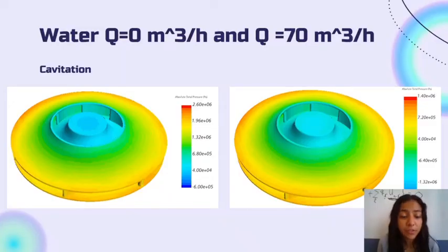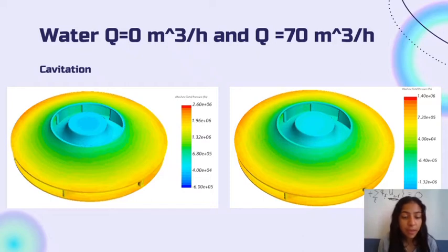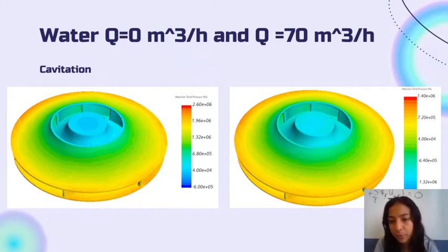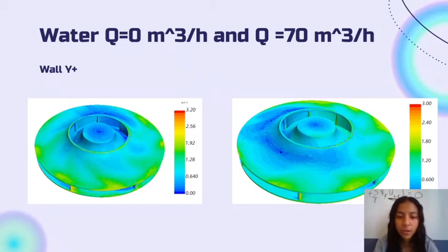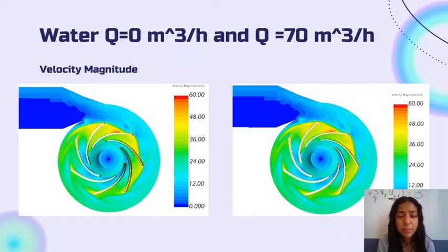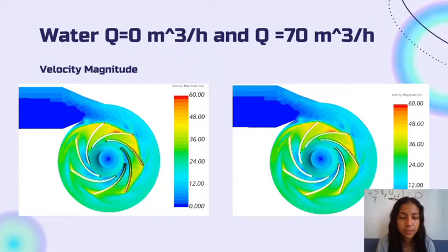Analyzing the cavitation in the simulation for water at flow of 0, there is cavitation in the darker blue areas, which are very small. In the image on the right, we have the flow of 70, and there are more areas where it cavitates, from the green areas to the blue areas. The wall Y-plus values range from 0 to 3.2 and are very similar in both cases. The velocity magnitude is also very similar in both cases because the RPM are the same.